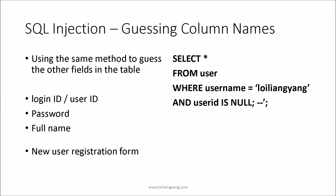The columns could be login ID, user ID, password, full name, or even credit card information. We can also move over to new user registration forms to look at what input values are coming in, or be specific on the web form so that we can map the column names properly.